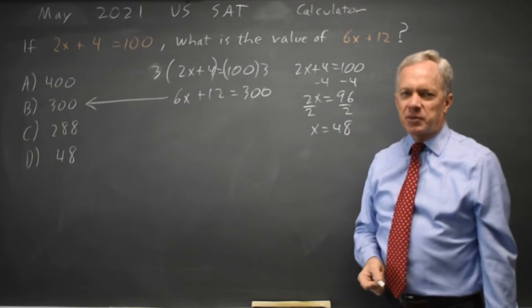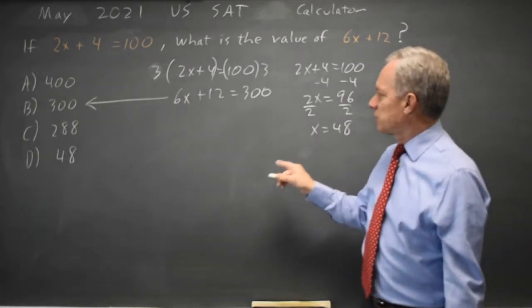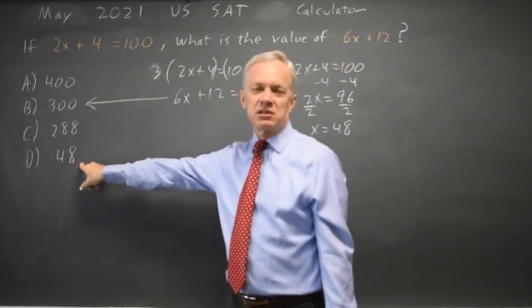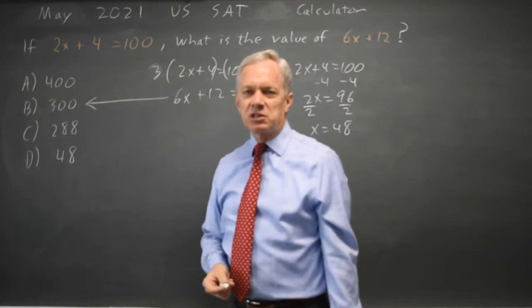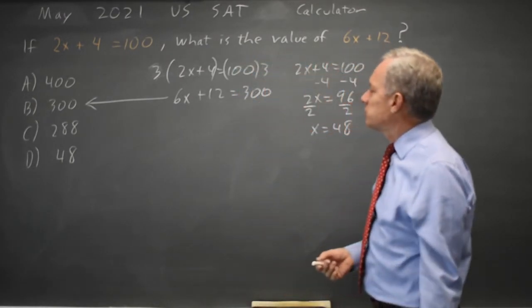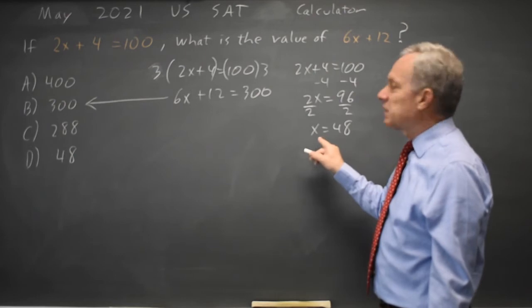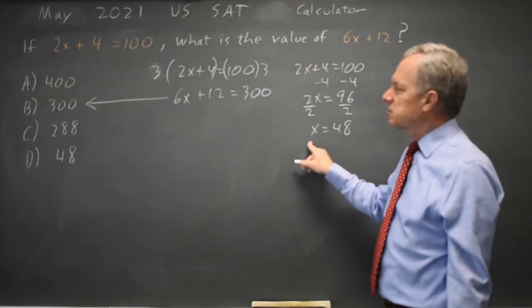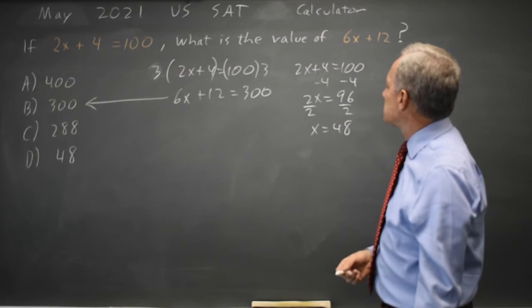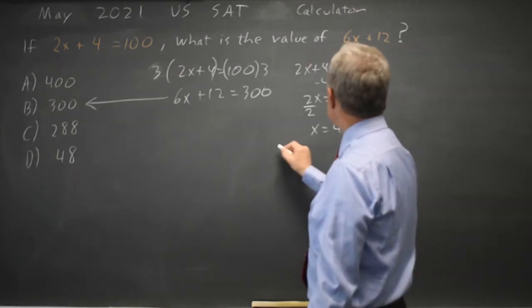This is a trap that often catches us because we just got 48 and that's one of our answer choices. We're tempted to jump on and just mark D and move on. But that's not what they're asking for. When you find an answer, always check and see if your answer answers the question the College Board is asking. They're asking for 6x plus 12.